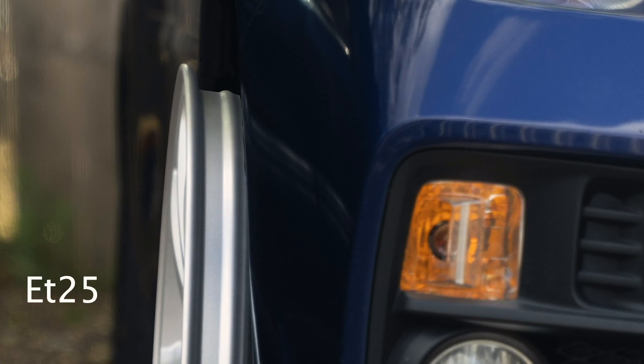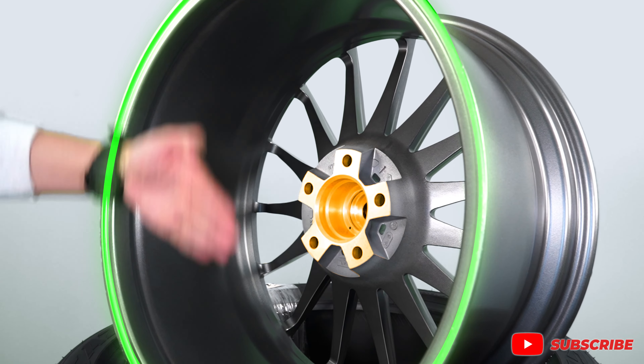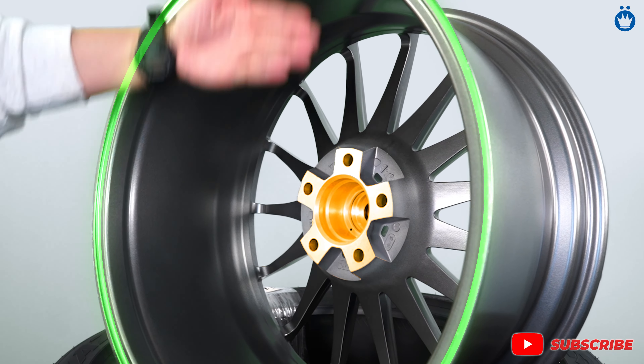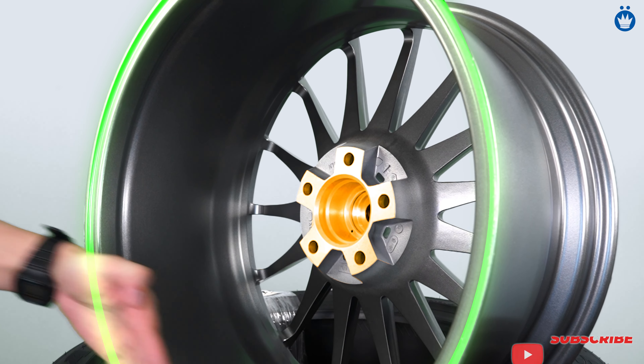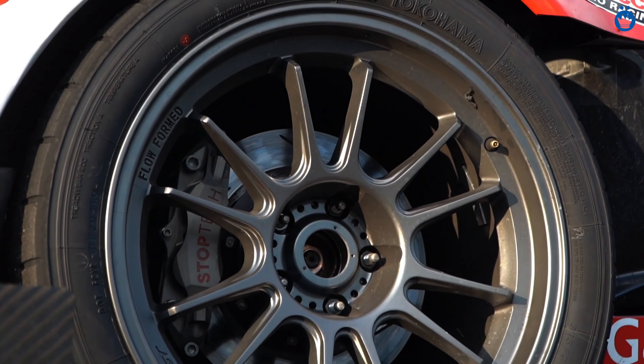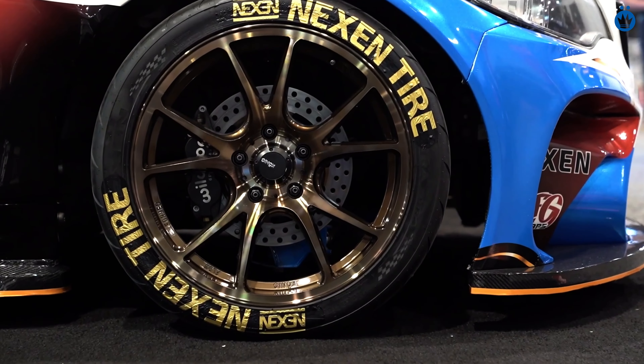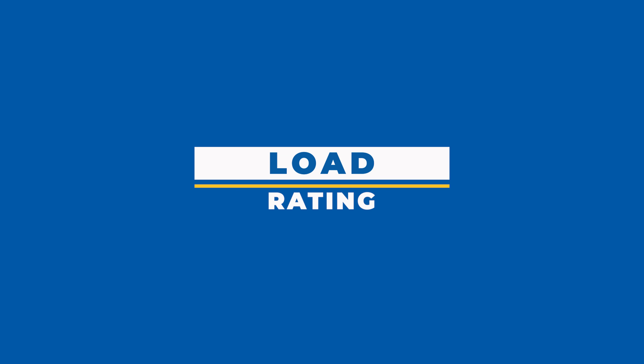What exactly is backspacing? Backspacing is the distance between the mounting pad and the back of the wheel. Also, if you have a big brake kit, you're gonna want a lower offset because that's gonna give you more clearance to clear that BBK that you have.